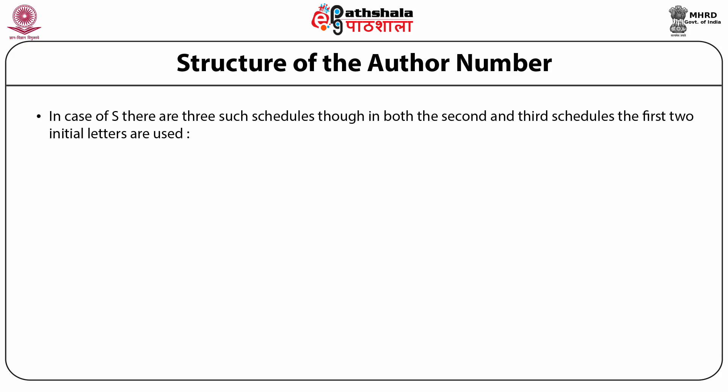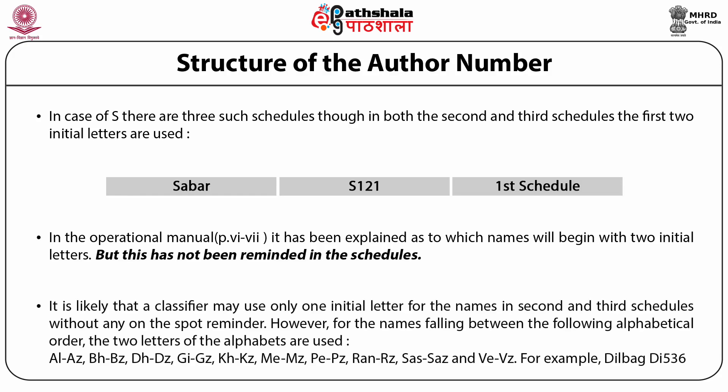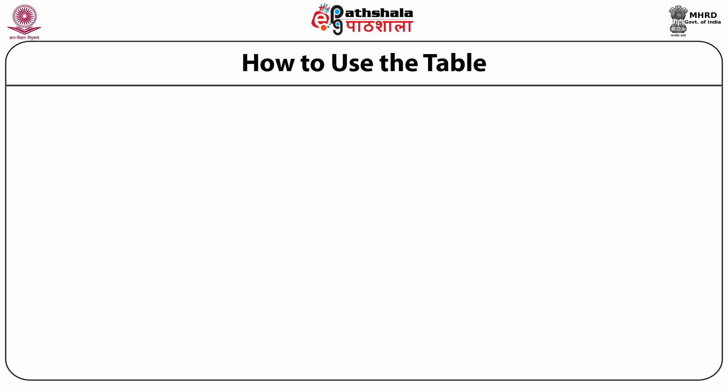In case of S, there are three such tables or schedules. In both the second and third schedules, the first two initial letters are used. For example, Sabar gets S121 in the first schedule. The operational manual explains which name will begin with two initial letters, but unfortunately this has not been indicated in the schedules, so a classifier may use only one initial letter for names in the second and third schedules without any on-the-spot reminder. For names falling between Al to Az, BH to BZ, DH to DZ, GI to GZ, KH to KZ, ME to MZ, PE to PZ, RAN to RZ, SAS to SAZ, and VE to VZ, two letters of the alphabet are used. For example, Dilbagh gets the number DI536.